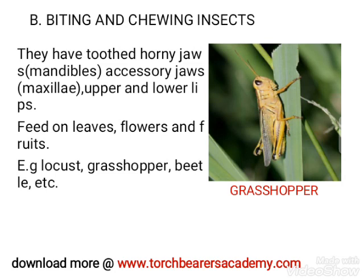Biting and chewing insects have toothed jaws called mandibles, accessory jaws called maxillae, and the upper and lower lips which are the labrum and labium. They feed on leaves, flowers, and fruits. Examples include grasshoppers and beetles.